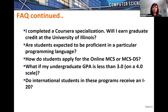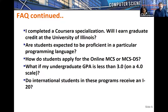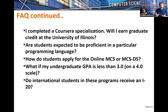If you completed a Coursera specialization, will you earn graduate credit at the University of Illinois? No. None of those MOOC courses confer any credit toward any degree. What you received through the Coursera specialization are the lectures and some classroom assignments, but nowhere near the projects, machine problems, assignments, and examinations needed to confer credit. You'll need to do that additional material once admitted to the University of Illinois and take the course for credit.